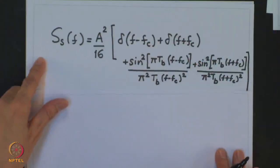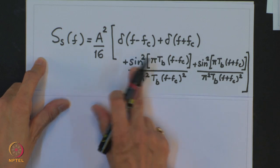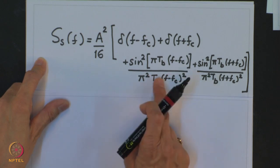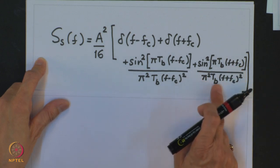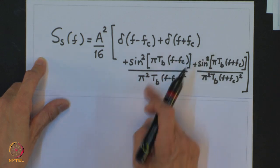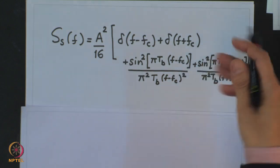Doing that, we get this expression — it is a slight approximation since there would be another cross-product term involving sinc of (π·T_B·(F−F_C)) and sinc of (π·T_B·(F+F_C)). However, since F_C is very large, we can neglect that cross-product term. Approximately, the result simplifies, and this becomes clear when we look at the diagram for the power spectral density.